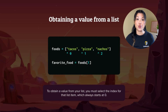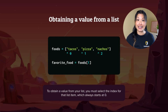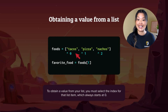But what if we just want one item inside of the list? To get a value from a list, you have to select the index for that list item. The indexes start at zero. So the first item inside our list has an index of zero, the second item one, and the third item two. Our indexes always start at zero.